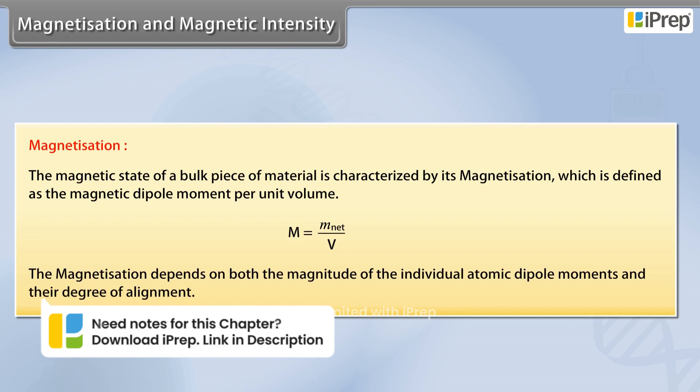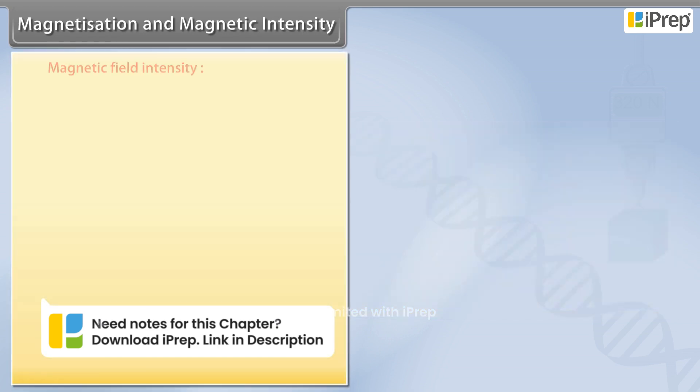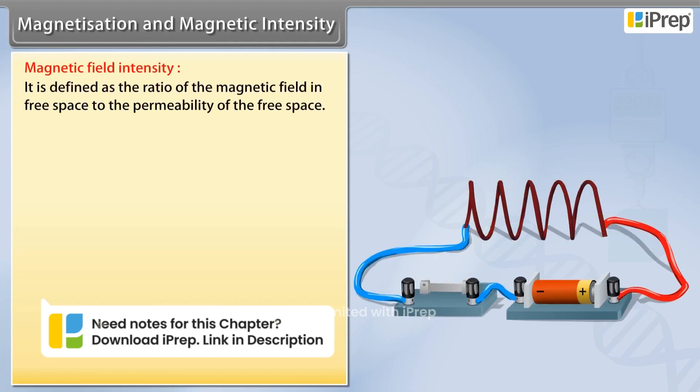Magnetic field intensity is defined as the ratio of the magnetic field in free space to the permeability of free space. H is equal to B₀ divided by μ₀.